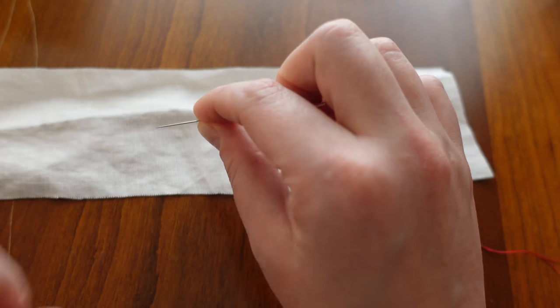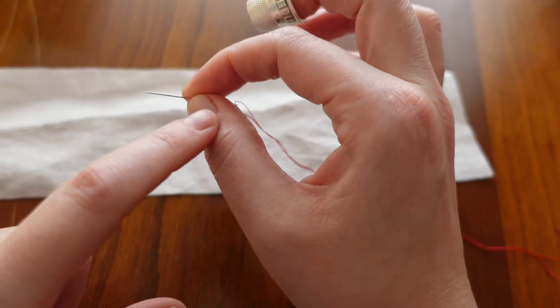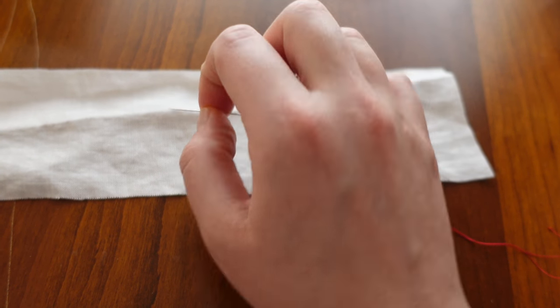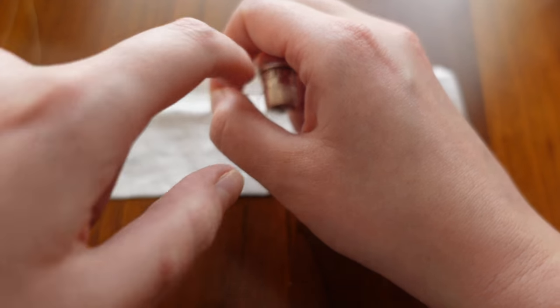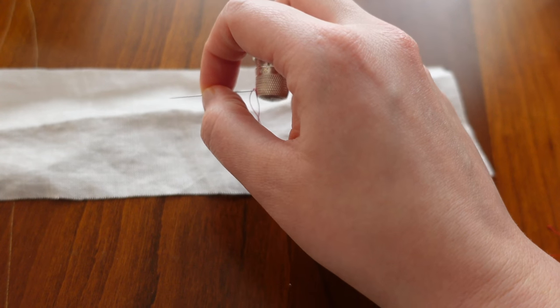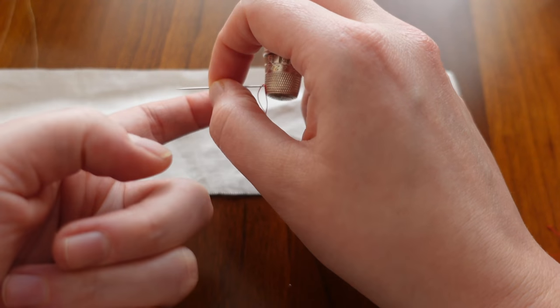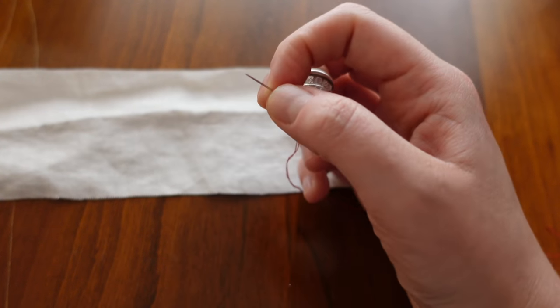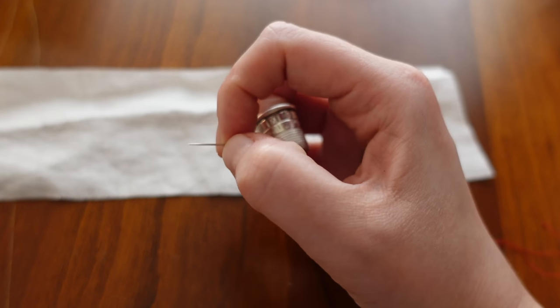As it relates to hand sewing I take my needle, I pinch it with my thumb and my forefinger and then I curl my middle finger in so that it actually is going to engage with the back of the needle. You can see that right there how it engages there.